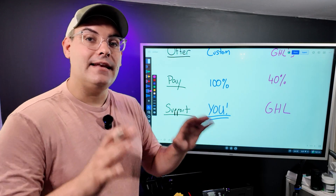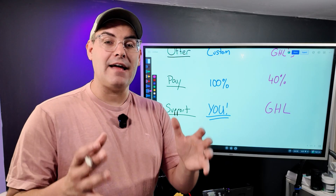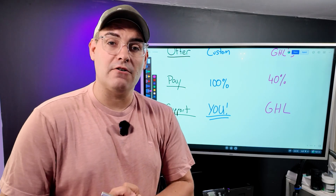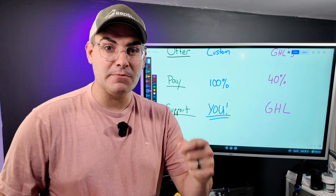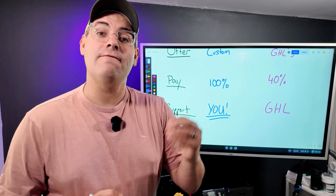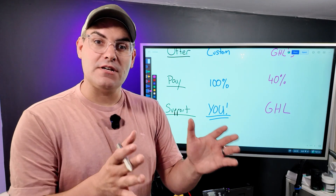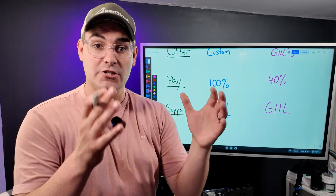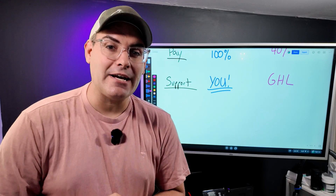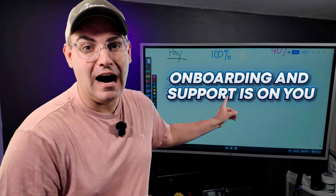Coming down to the pay: as a white label, you get to keep 100% of the money that your customer sends you. If your advertised price is $500 a month and your customer pays you $500 a month, you're going to keep $500 a month minus any processing fees. However, as an affiliate, you're only going to earn a 40% commission on any sales that you make — the other 60% of the pie goes to HighLevel. So if the customer pays $500, you're going to make $200. You get to keep that extra 60% as a white labeler because onboarding and support is on you.